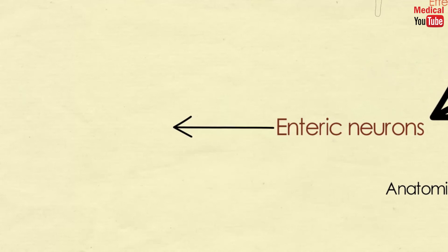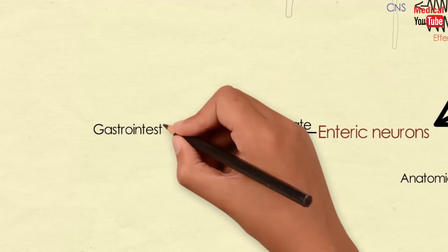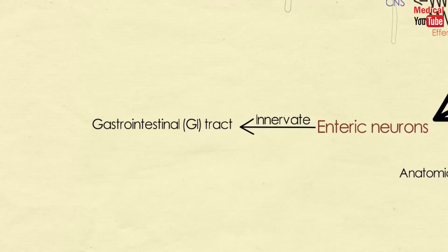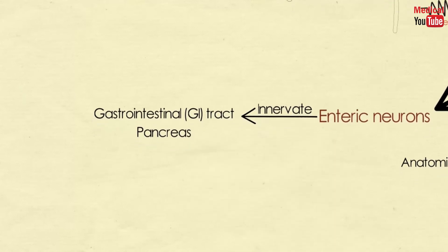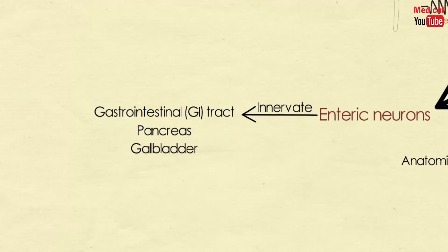And the final division of the autonomic nervous system is the enteric neurons. It is a collection of nerve fibers that innervate the gastrointestinal tract, pancreas, and gallbladder. This system functions independently of the CNS. It is modulated by both the sympathetic and parasympathetic nervous systems.